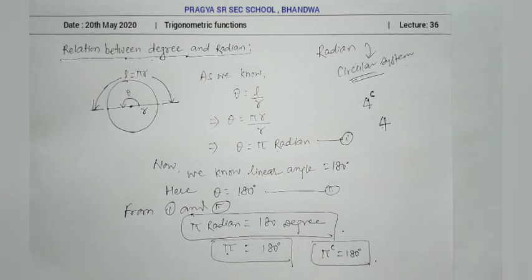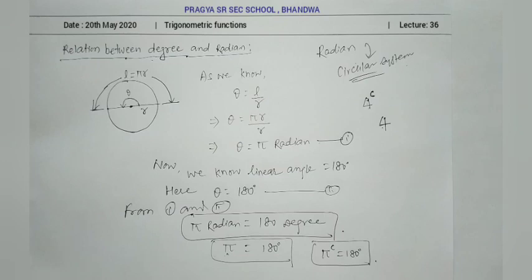In the next lecture we will learn how to convert our standard angles — 30 degrees, 45 degrees, 60 degrees, 90 degrees — into radian measurement, and many more conversions. So we will continue in the next lecture. Till then, note down everything in your fair notebook: the relation between theta, L, and R; the relation between degree and radian; and what radian measurement system is. That's it for today, thank you.